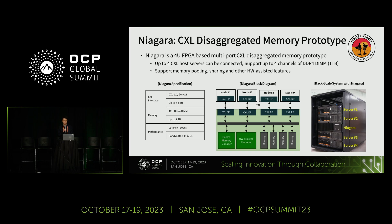Niagara is a 4U FPGA-based CXL distributed memory prototype. Up to four host servers can be connected, and Niagara supports up to four-channel DDR4 DIMMs with a maximum memory capacity of one terabyte. You can see the Niagara specification in the left table. This is an FPGA-based prototype, so performance is a bit lower than ASIC or product level, but we were able to achieve meaningful results through our benchmark experiments.